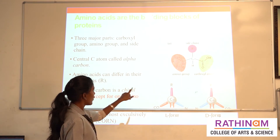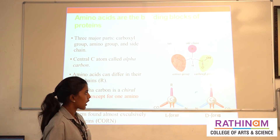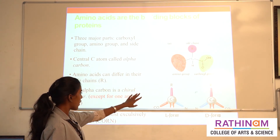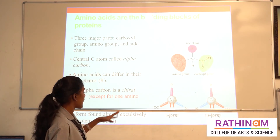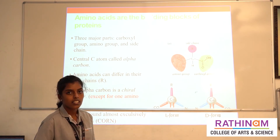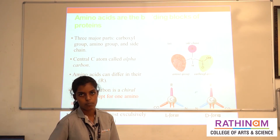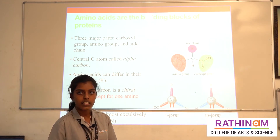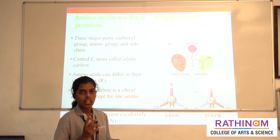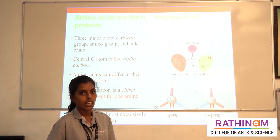There is a central carbon atom called the chiral carbon, denoted as the alpha carbon, in all naturally occurring amino acids. Amino acids can exist in two different forms — L-form and D-form — based on optical isomerism. But all naturally occurring amino acids are L-forms.